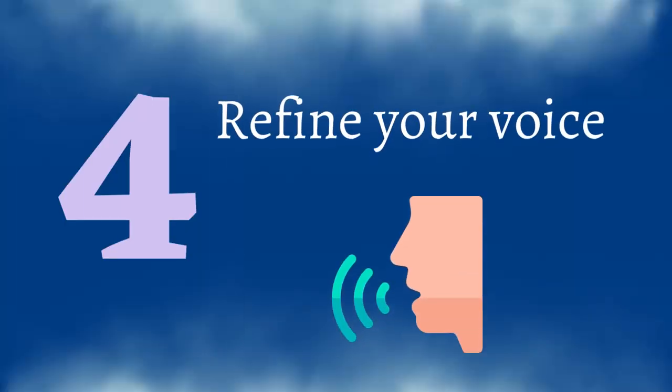Number four: refine your voice. As you go through and start typing, you may get into the weeds emotionally and just write 'and then that happened, and then that happened.' You might get into the zone, and then read it back and think, 'this doesn't even sound like me.' When that happens — and it will — go back through and refine your voice. Break it into smaller paragraphs, put dialogue in, and do whatever you need to make it sound like you.